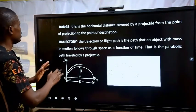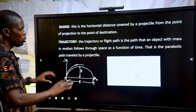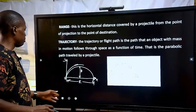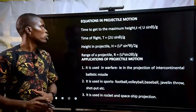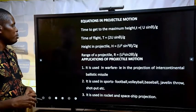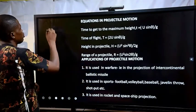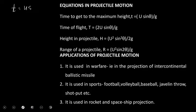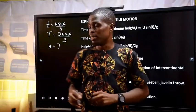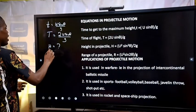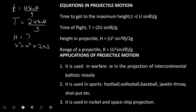Now let's look at the equations for time of flight, height, and range of a projectile. We have already established that small t = u sin theta / g and capital T = 2u sin theta / g. To derive the height of a projectile, we use the equation v² = u² + 2as. The velocity v at maximum height is zero, the acceleration a is negative g, and s equals h. The initial velocity u becomes the vertical component uy.